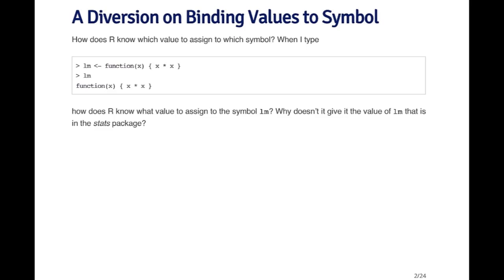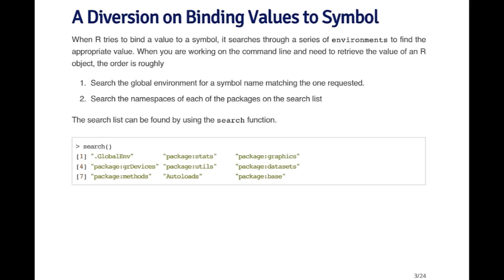Now, there's already a function in R called LM. So I've created a function here also called LM. When I call LM somewhere else in R, maybe in another function, how does R know what value to assign to the symbol LM? Does it call the function just defined here, or the LM function in the stats package that's used to fit linear models? R needs to bind a value to a symbol — either my function or the one in the stats package.